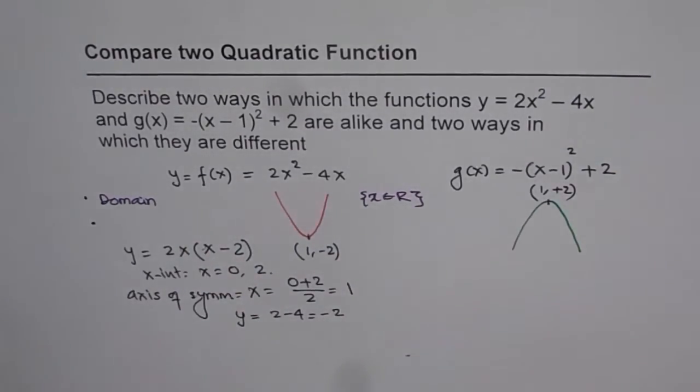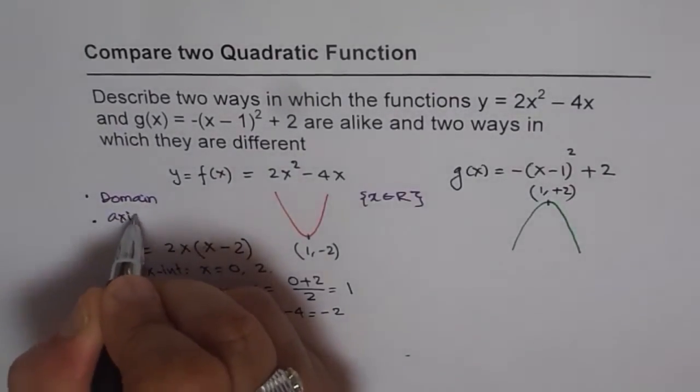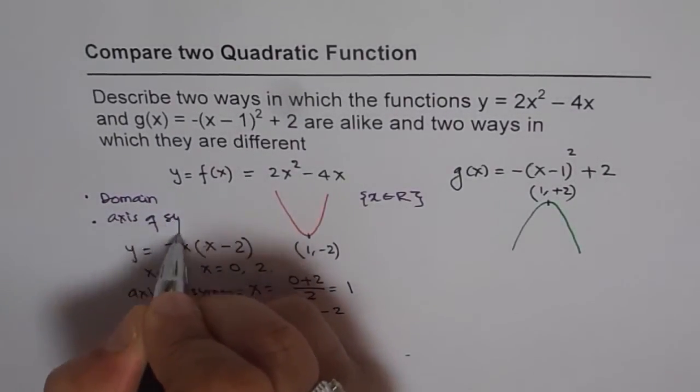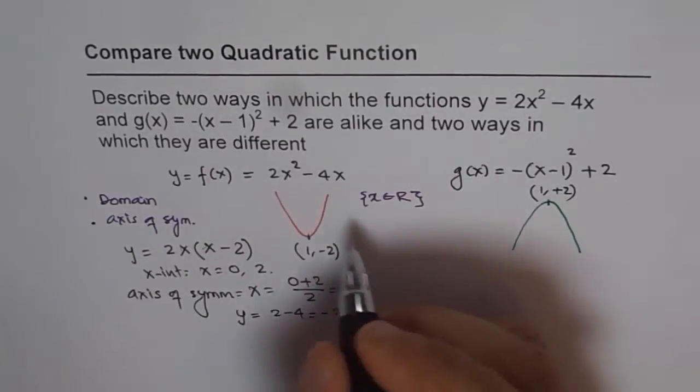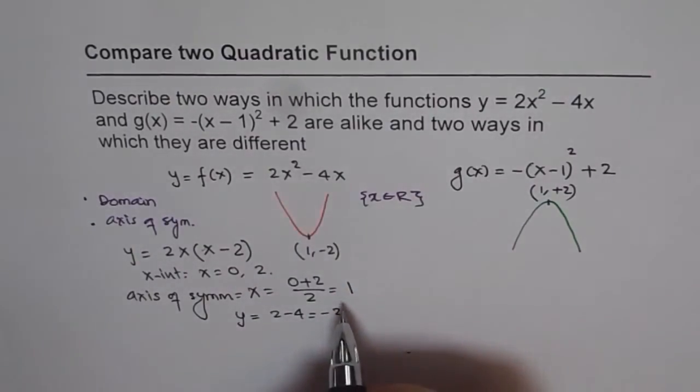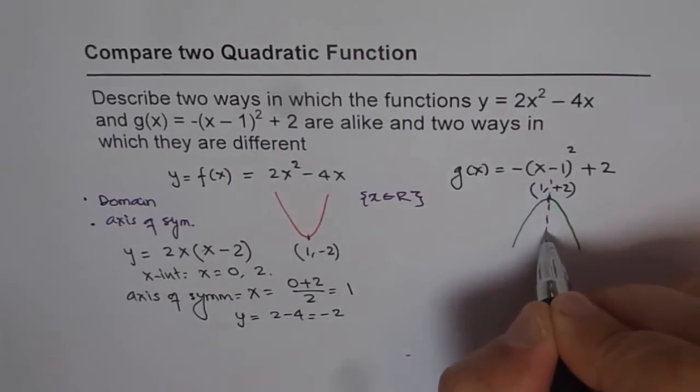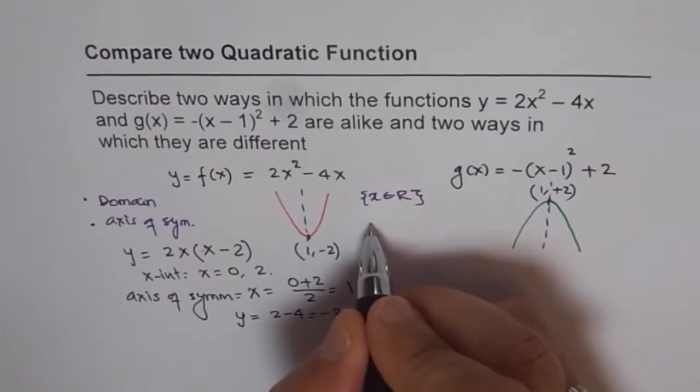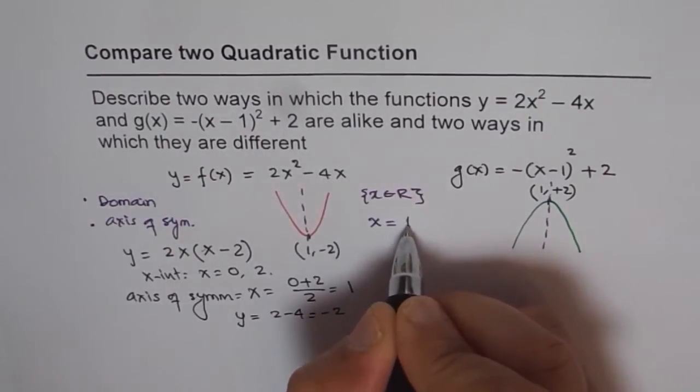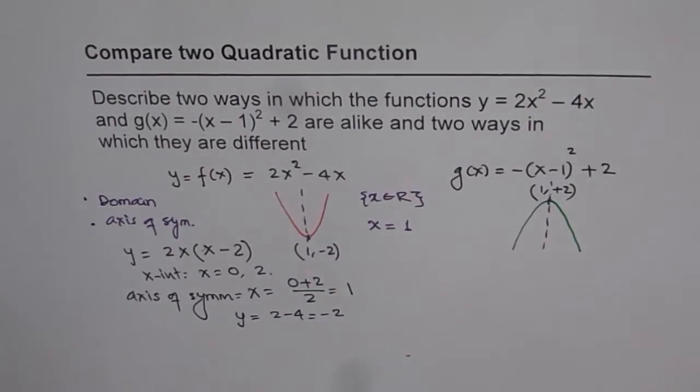And the other similarity which we see is axis of symmetry. In both the cases, we find that the axis of symmetry is x equals 1. So this line, which is axis of symmetry, is same for both the parabolas, which is x equals 1. So these are two similarities.